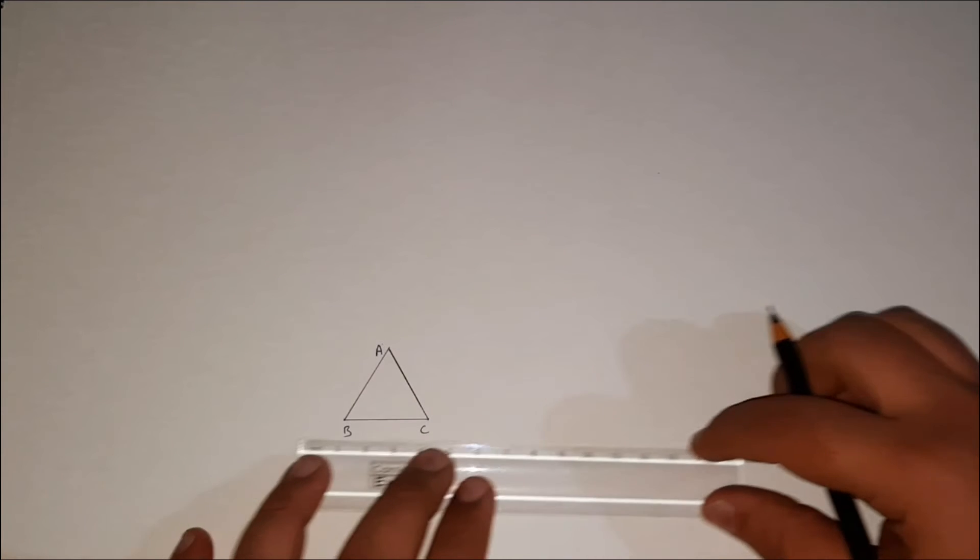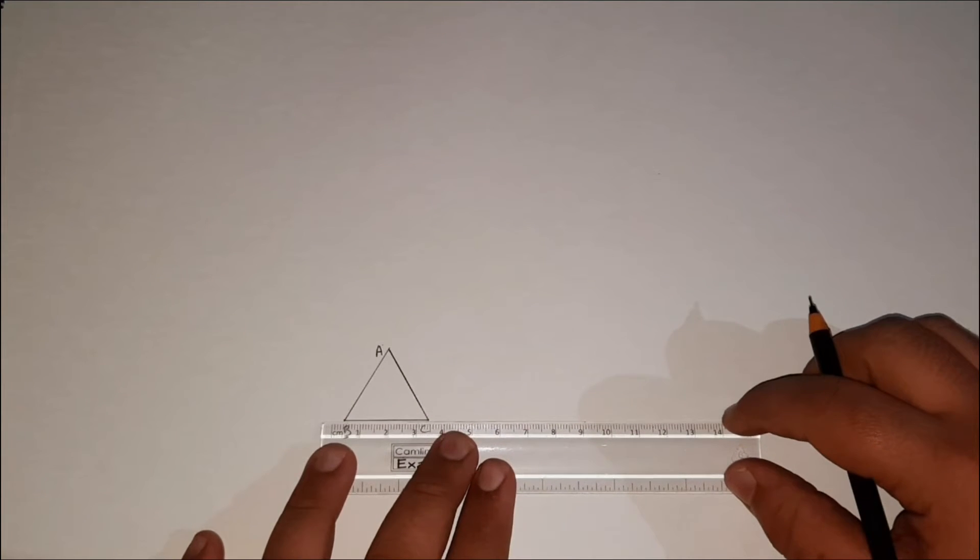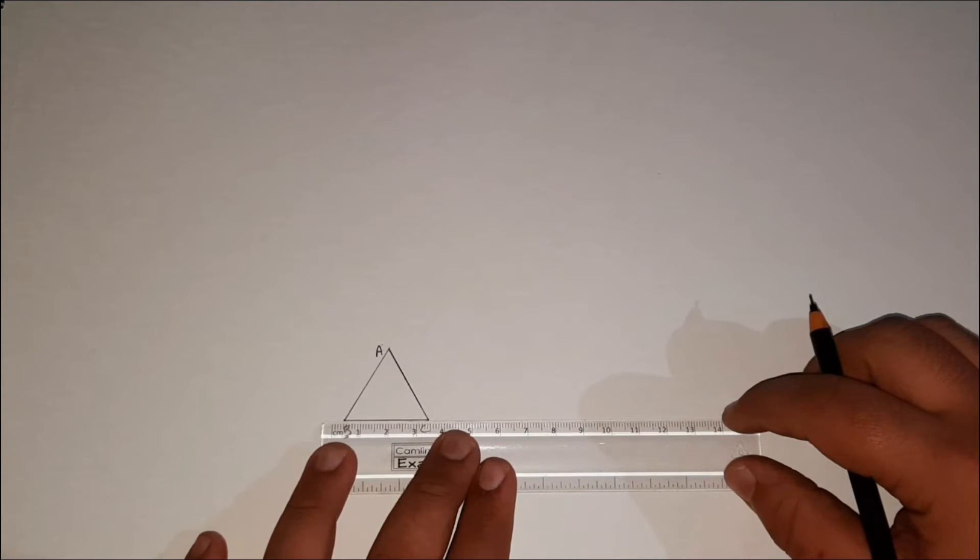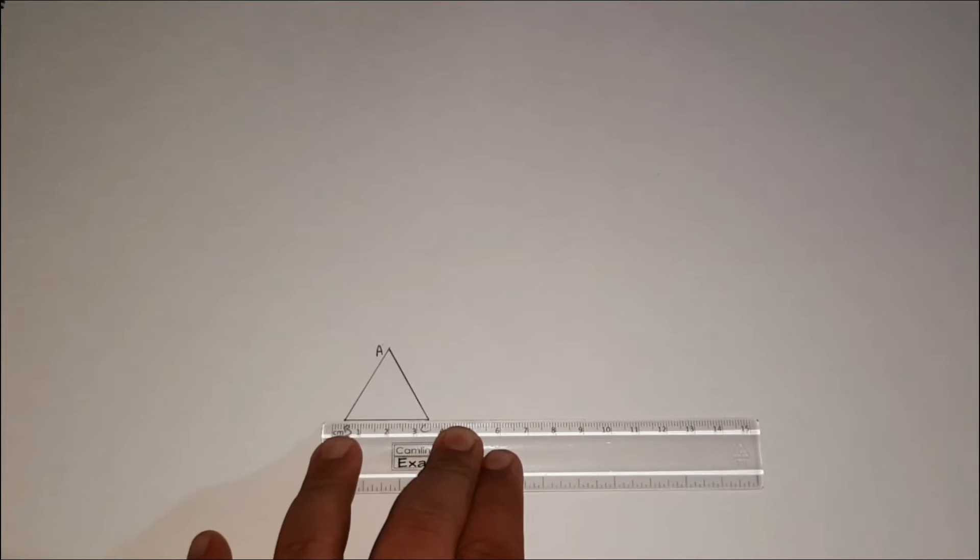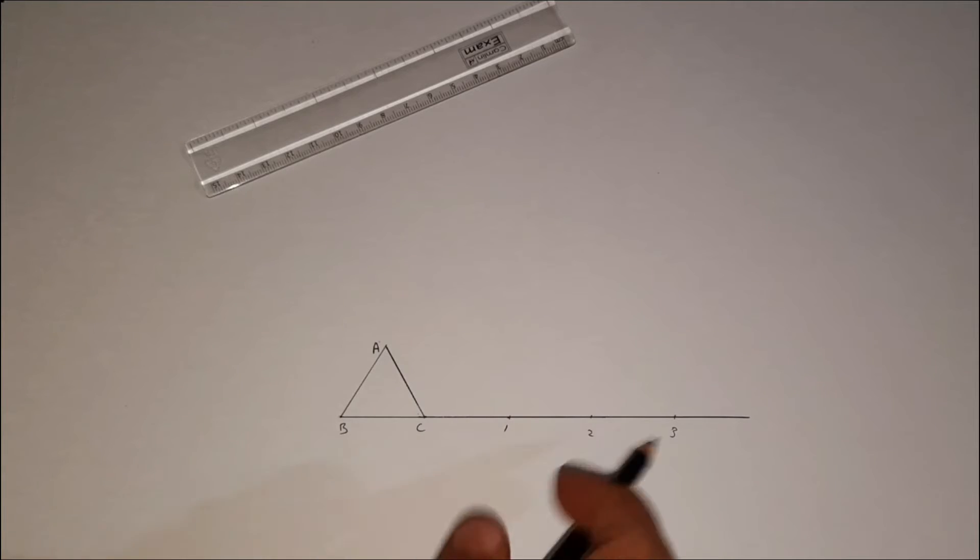Now we will make involute of triangle. This is an equilateral triangle and the side is 3 cm. Now I will extend the line BC. Here I have taken 3 points: C1 is 3 cm, 1-2 is 3 cm, and 2-3 is 3 cm.